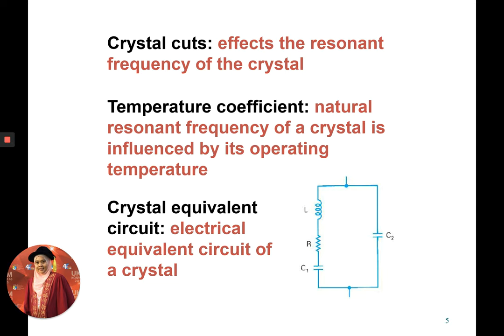If we have a higher temperature for the crystal, the crystal will oscillate or resonate at a higher speed rather than at a lower temperature. There is also the crystal equivalent circuit, which is a circuit equivalent to what the crystal oscillator does but without using any actual crystal. We use a coil, a resistor, and two capacitors — with the coil, resistor, and one capacitor in series, parallel to another capacitor C2 — to achieve an almost similar effect to a crystal oscillator.